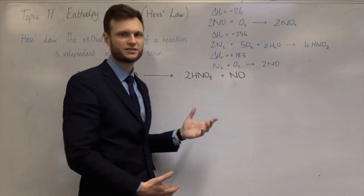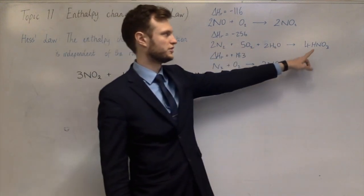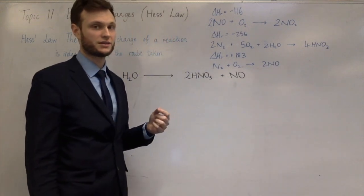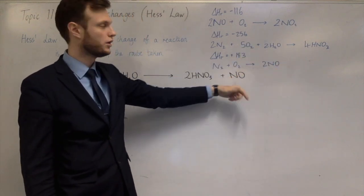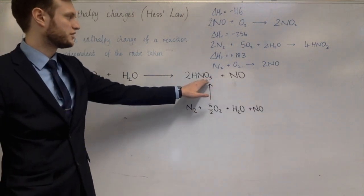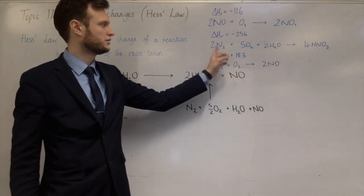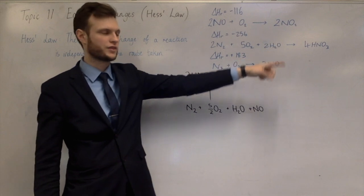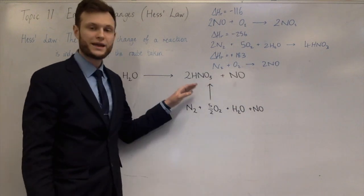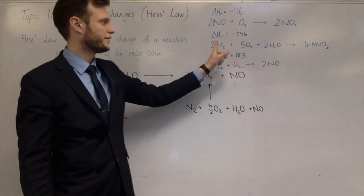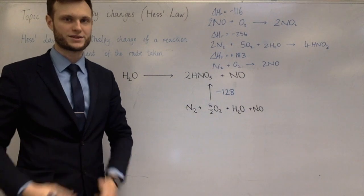I'll start with the middle equation because it makes nitric acid, and I've got to make nitric acid. I take that middle equation, halve it because I'm making two instead of four, and place it here. You can see nitric acid being made from nitrogen, five-halves oxygen, and water — all halved, making half the product. The nitrogen monoxide doesn't take part in that reaction so it doesn't change. The enthalpy change is half of that reaction's value, giving minus 128 kJ/mol.